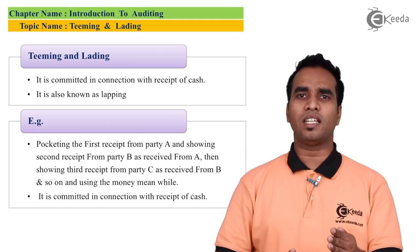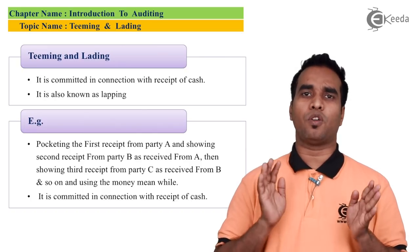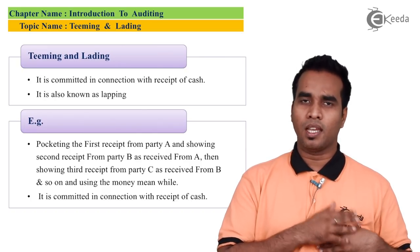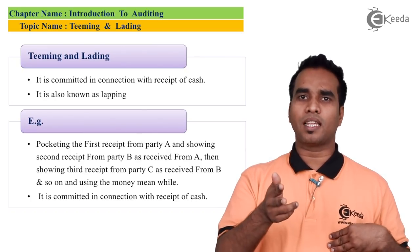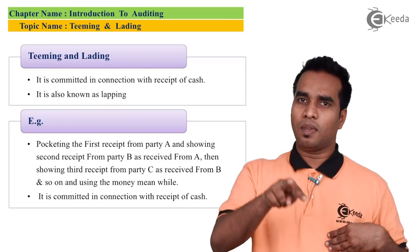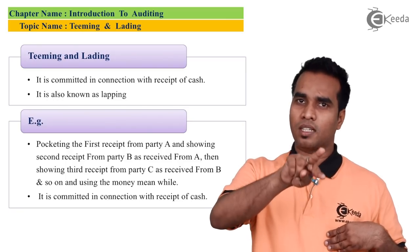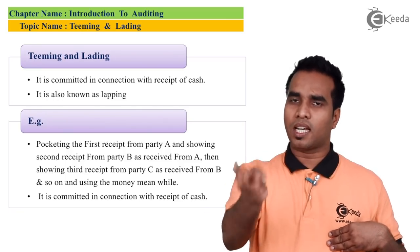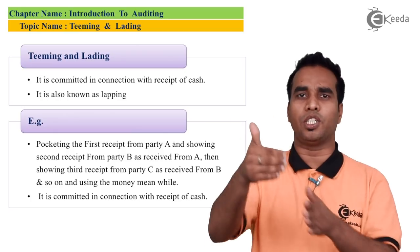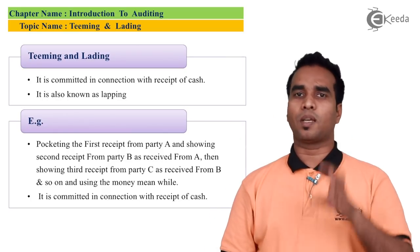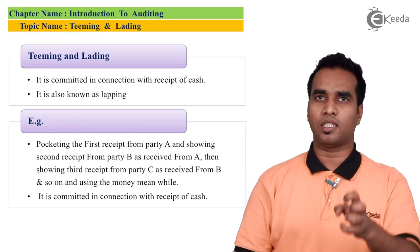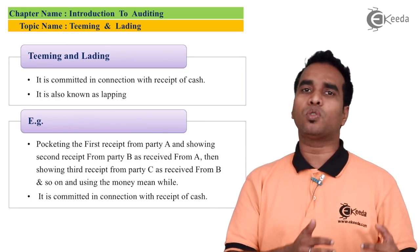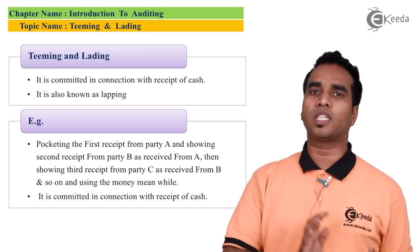Teaming and leading means misappropriation of cash. The cycle continues — A, B, C, B — it will keep continuing. Teaming and leading does not mean the cash is taken away permanently all at once; it is concealed through this rolling cycle.